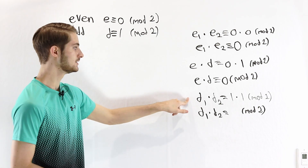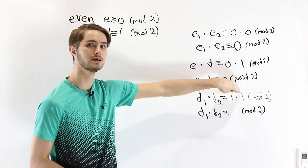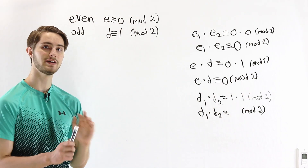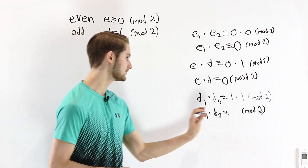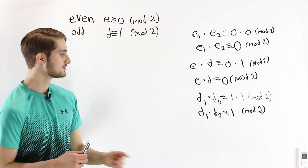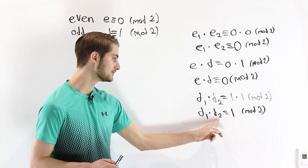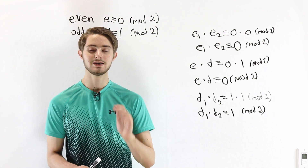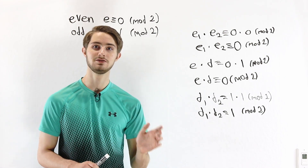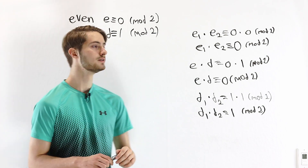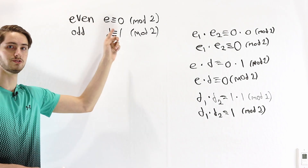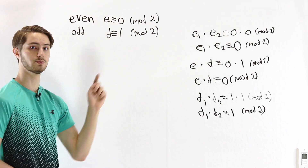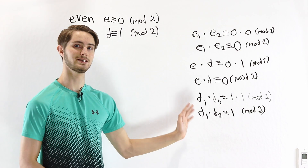For the last case, we're multiplying two odd numbers, which means both are congruent to 1. So on the right side we have 1 times 1 mod 2. This time we don't have any zeros, and 1 times 1 equals 1. When we multiply two odd numbers, the result is congruent to 1 mod 2, which means it is also odd. That's how we can easily derive the properties of even and odd numbers using modular arithmetic — knowing that even is congruent to 0 and odd is congruent to 1, and doing simple arithmetic on those values.